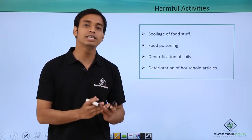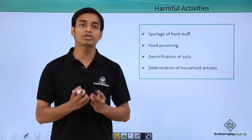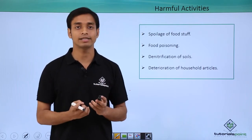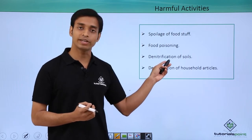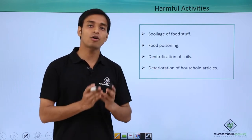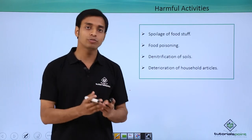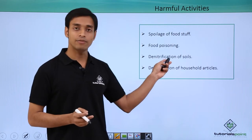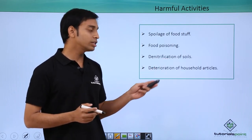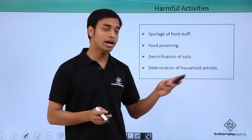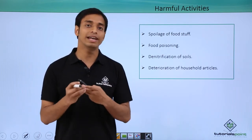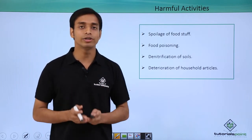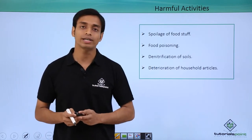Saprophytic bacteria also cause denitrification of soil. Because of denitrification, nitrogen as a source of nutrient for plants decreases, and this form of nitrogen cannot be used by plants as a source of nutrient — making it very harmful for plants. Additionally, these bacteria cause deterioration of household articles such as leather, wood, and fibers.